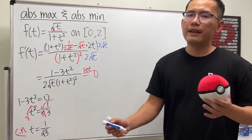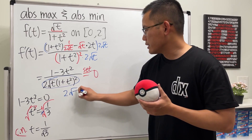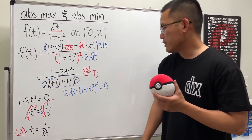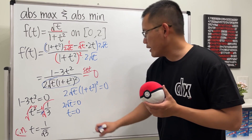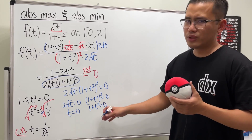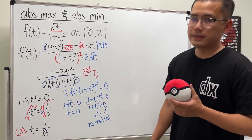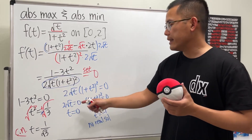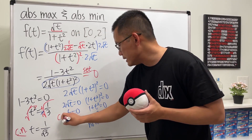We also have to look at another critical number. Since we have a denominator, we set it to 0 to find where the derivative does not exist. We have 2 times square root of t times 1 plus t squared squared. This means t equals 0. If we set 1 plus t squared equal to 0, we get t squared equals negative 1, which has no real solution. So t equals 0 is a critical number because it makes the derivative not exist, and 0 is inside the domain — square root of 0 over 1 plus 0 squared is legitimate.